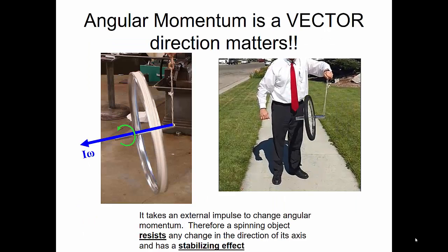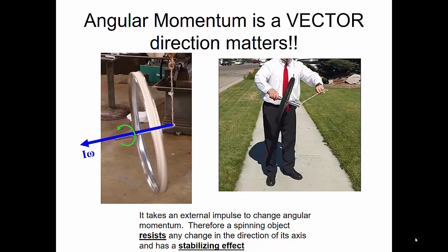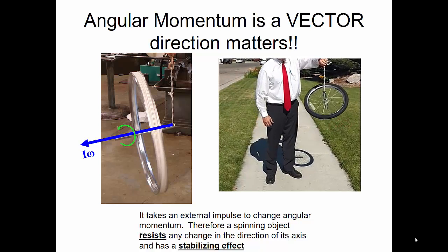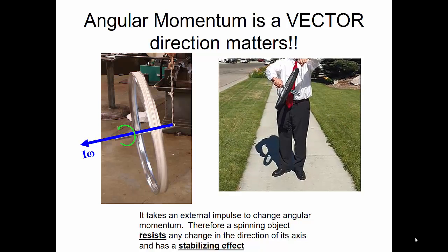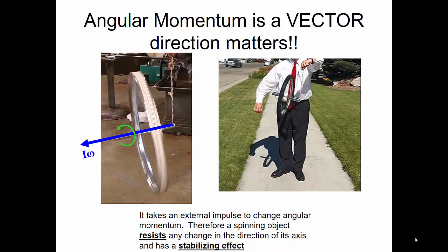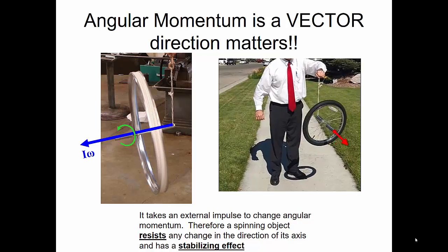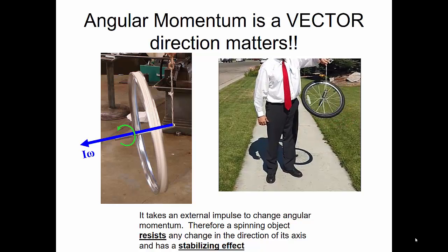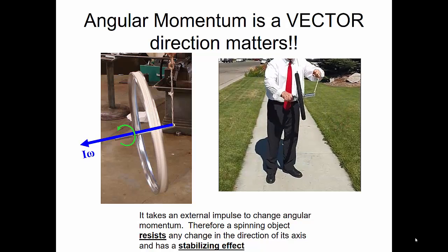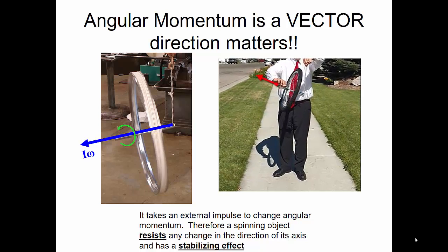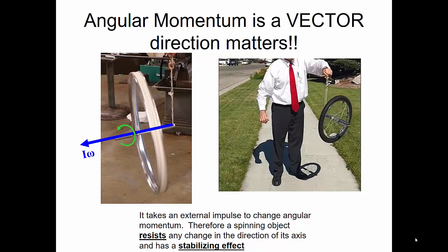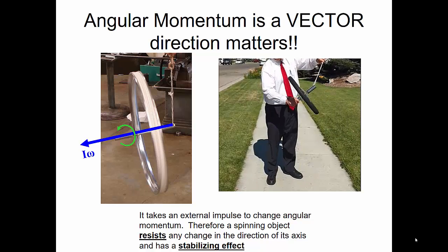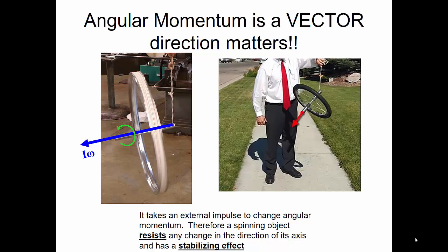Here's another application of angular momentum. We have to remember that angular momentum is a vector and direction matters. When we have conservation of angular momentum, that angular momentum wants to stay conserved. For example, if I have a bicycle wheel that I spin, there's a direction associated with that rotation — an angular momentum associated with it. It wants to conserve that, so it tries to stay in the position it's originally put at. If I spin the wheel and hold it at a certain angle and let go, it will try to stay at that angle. It takes an external impulse to change the angular momentum, so the spinning object resists any change in the direction of its axis of rotation, having a stabilizing effect on the system.